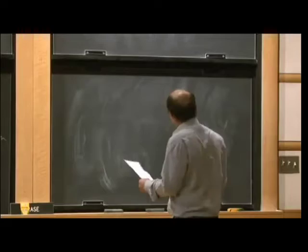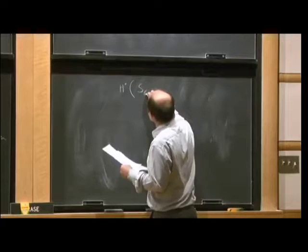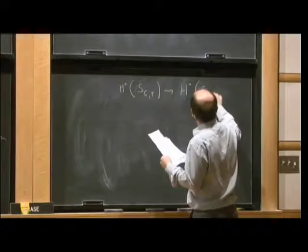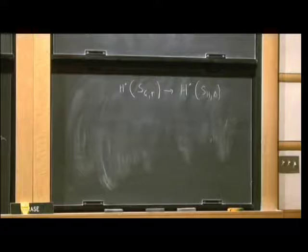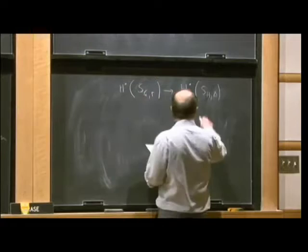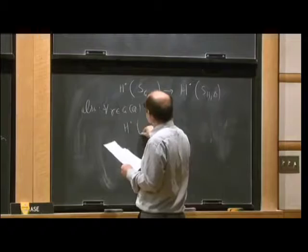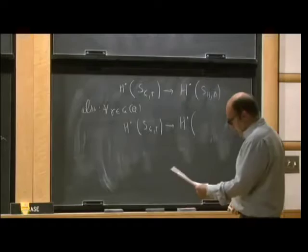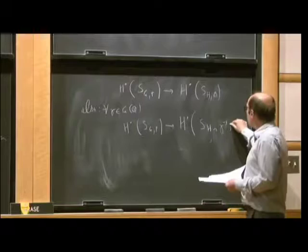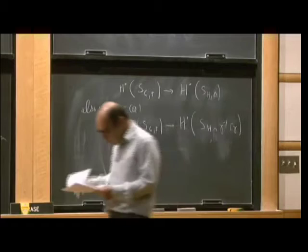So, of course, associated to that, we get a restriction map in the cohomology. H dot of SG gamma into H dot of SH delta. And, as I said, to actually get injectivity, you have to move around something. So I'll choose to move around the group here, the intersection. So for each gamma in G of Q, I can look also at the restriction SG gamma to H dot of SH into gamma minus one gamma gamma. So I changed the group here.